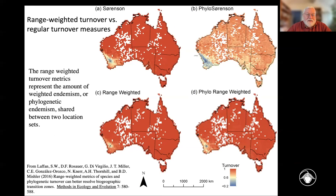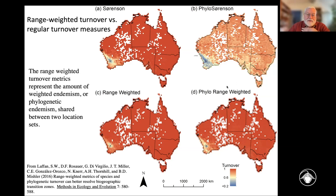This map illustrates — and I'm going to walk through it — using Australia as an example, because this is where it was developed. The principle applies anywhere, though. This is comparing four kinds of turnover. The top-left is regular species turnover, the bottom-left is range-weighted species turnover, the upper-right is phylogenetic turnover on the original tree, and the lower-right is the range-weighted phylogenetic turnover — the PE turnover — on the range-weighted tree.